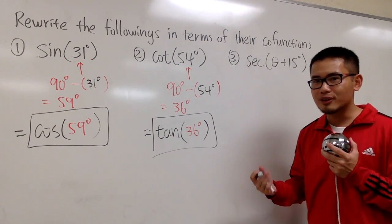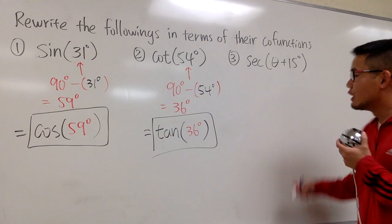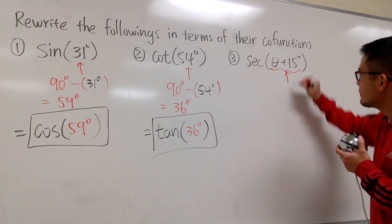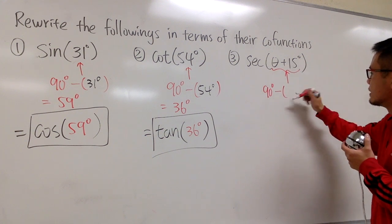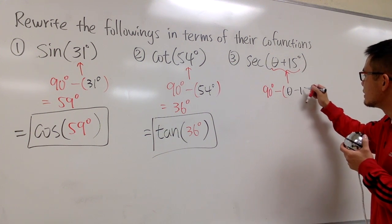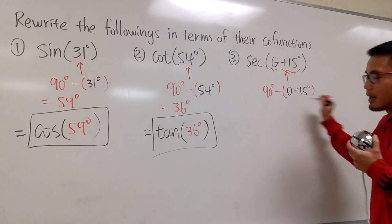So we have to do some algebra right here. But it's the same fundamental. We look at whatever this is. And then we do 90 degrees minus this, which is theta plus 15 degrees at the moment.